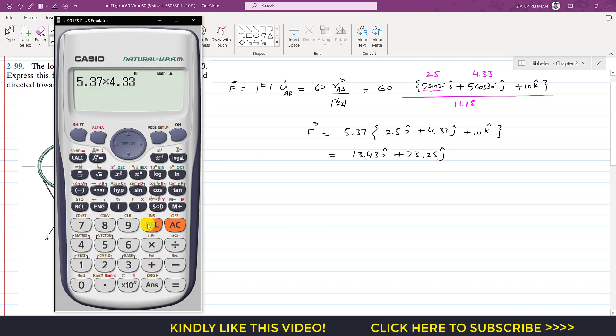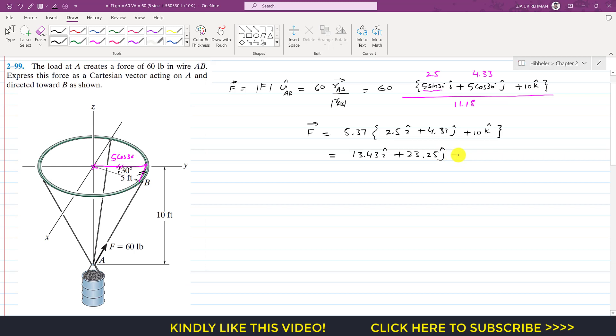Then we multiply by 10, which gives 53.7 k. So this is the Cartesian vector representation of the force F acting from A to B with magnitude of 60 pounds.